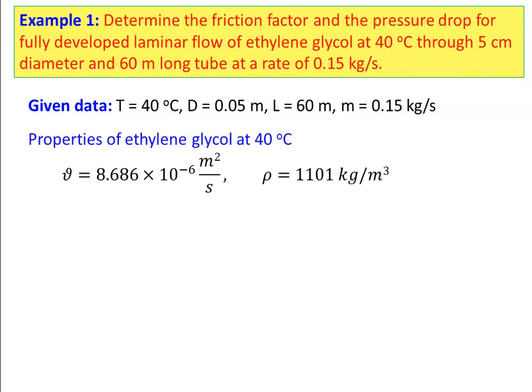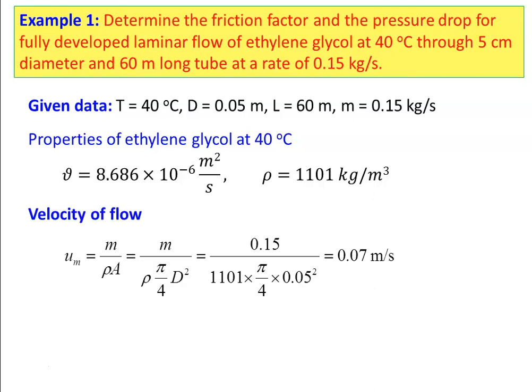Properties of ethylene glycol at 40°C: kinematic viscosity ν = 8.686 × 10⁻⁶ m²/s, density ρ = 1101 kg/m³. Velocity is calculated from the continuity equation: U = m/(ρ·A) = m/(ρ·π/4·D²) = 0.15/(1101 × π/4 × 0.05²) = 0.07 m/s.